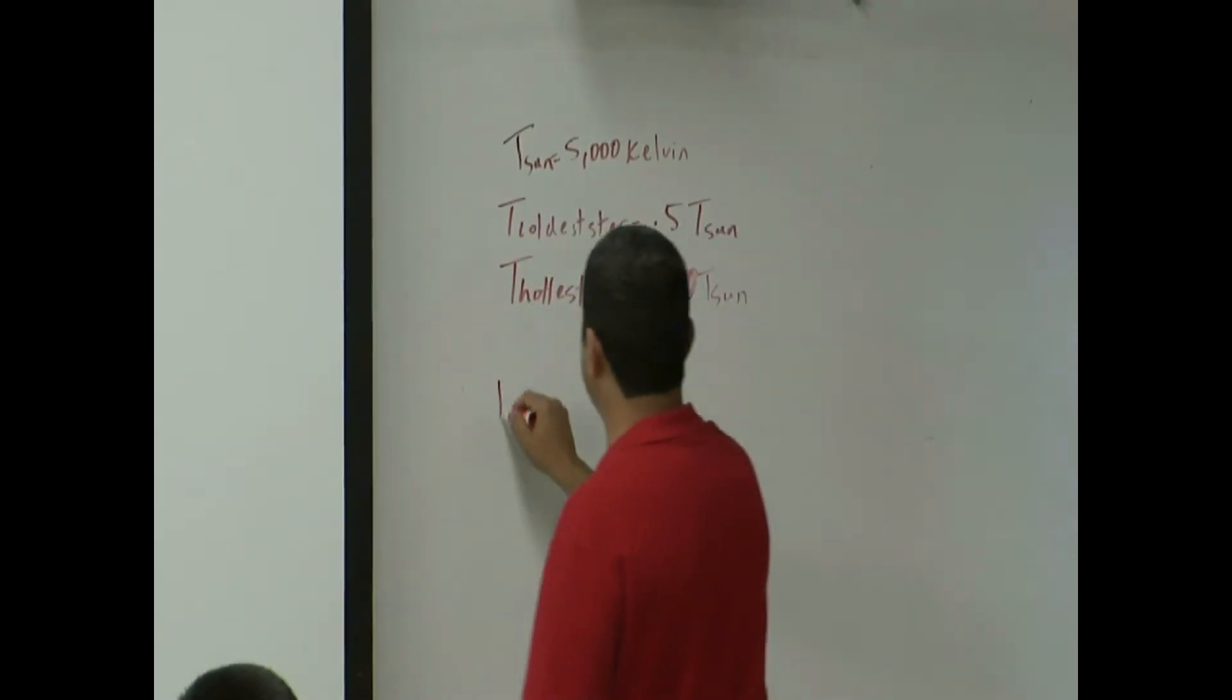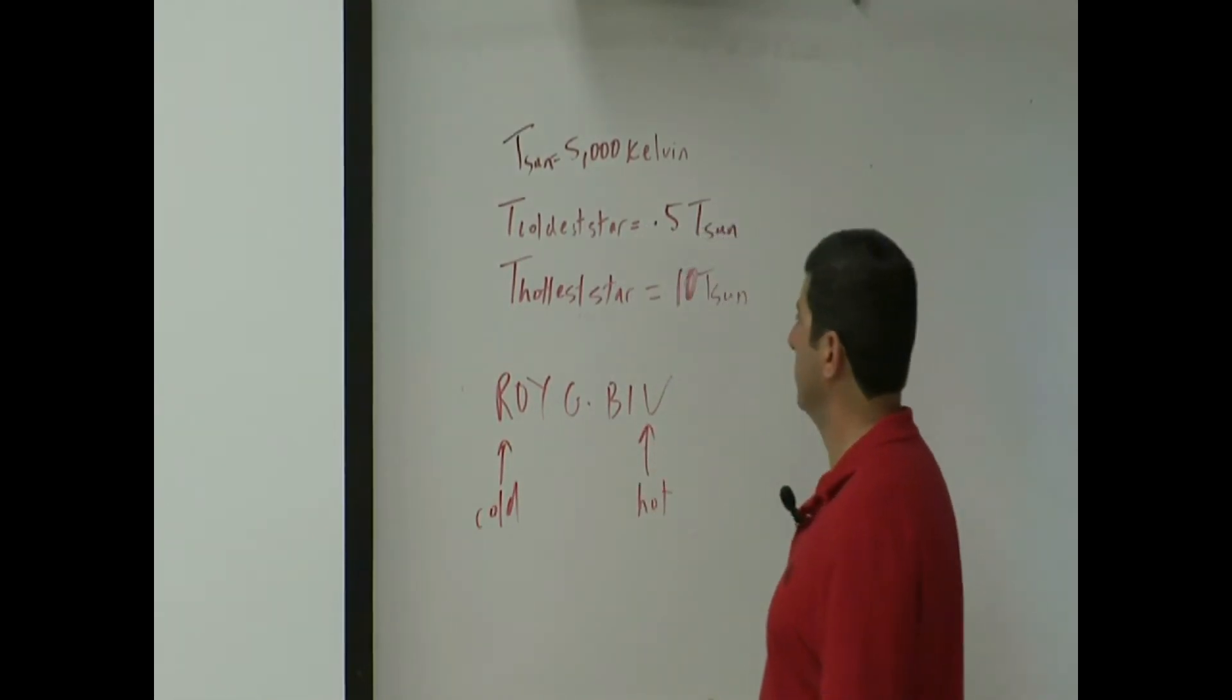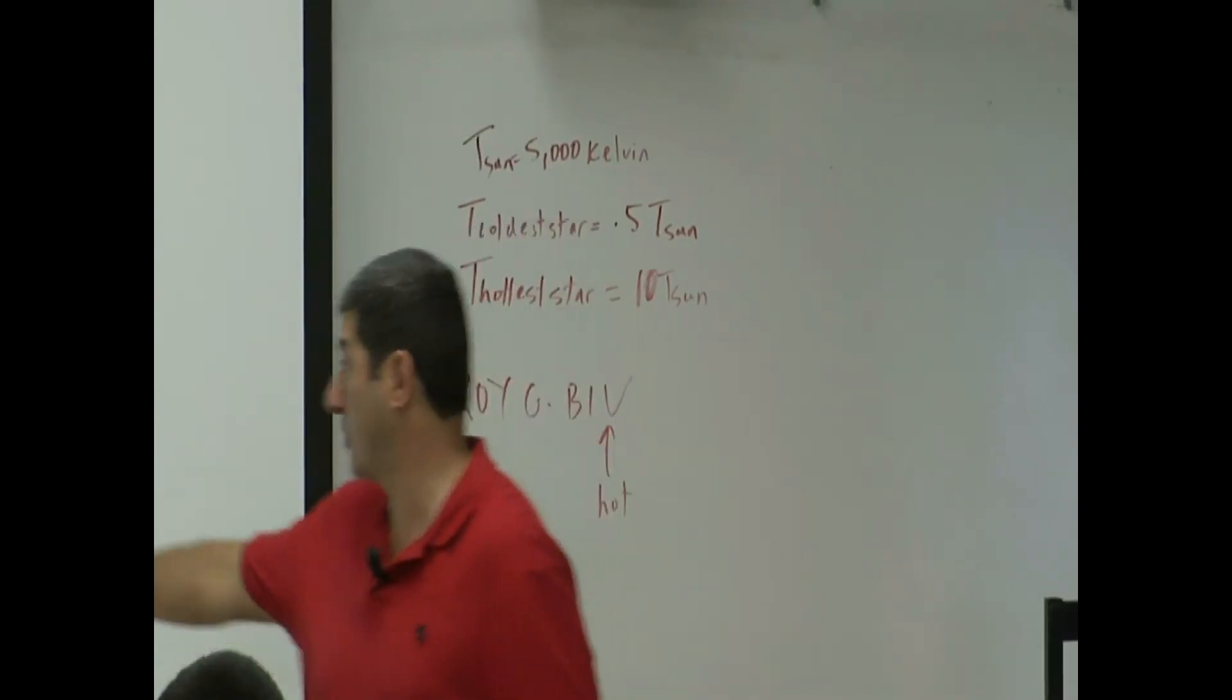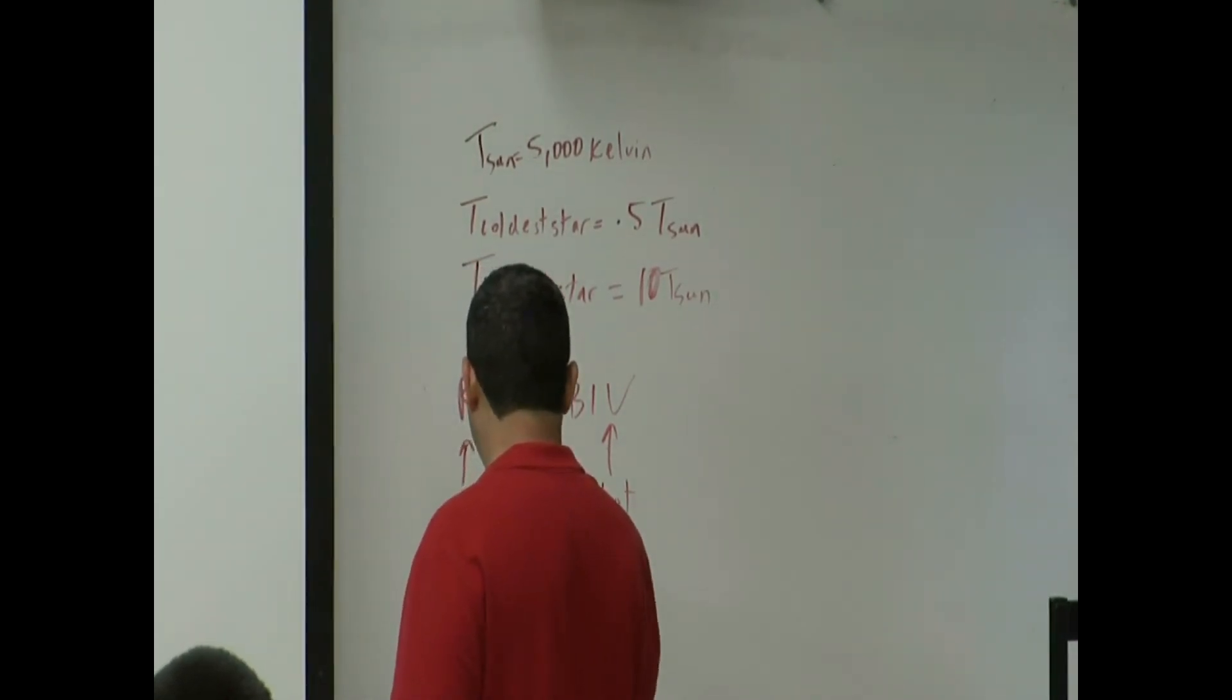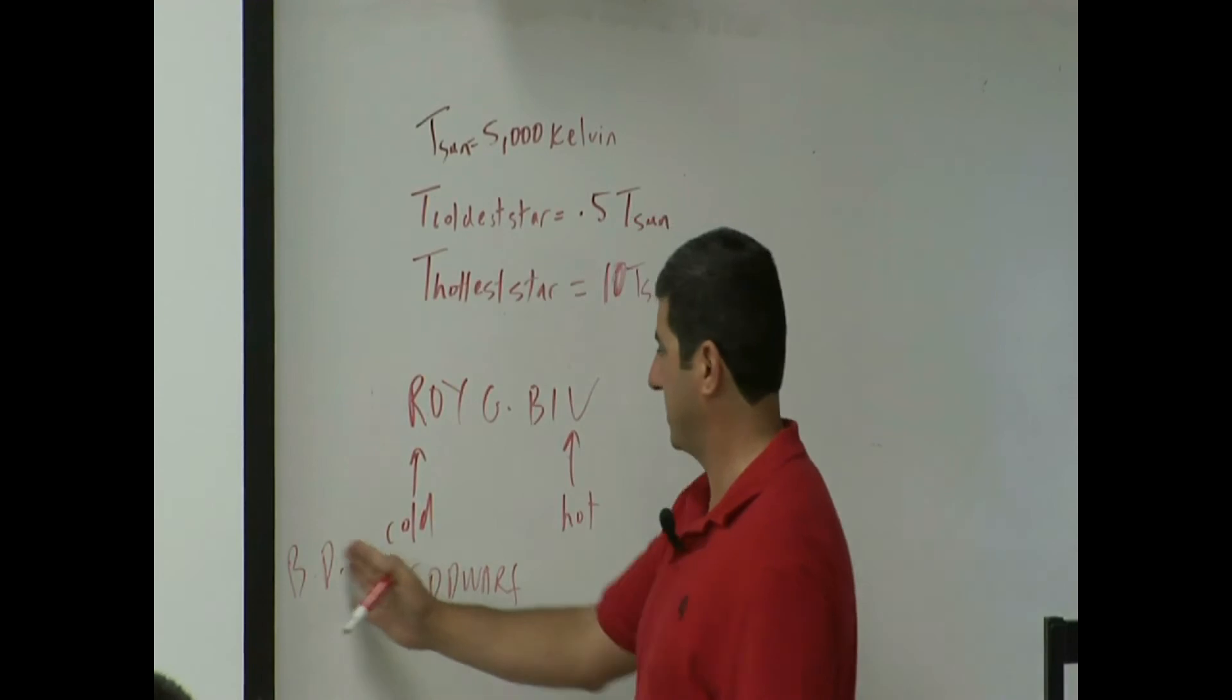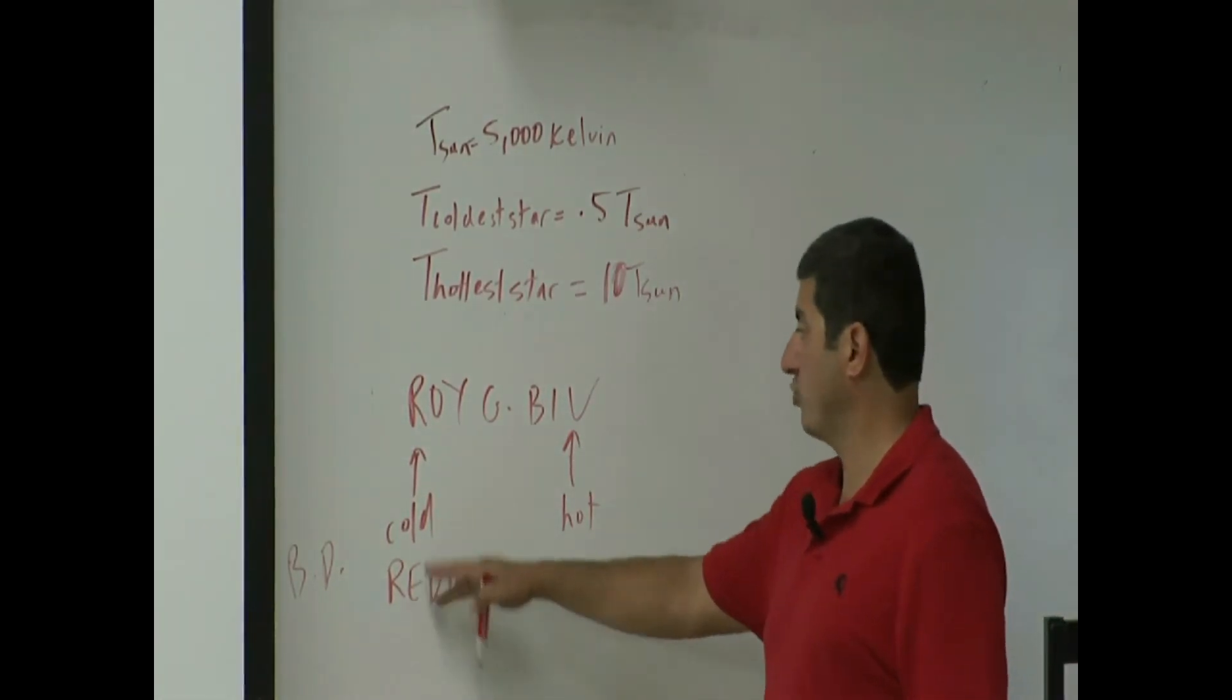What color will this coldest star appear? Remember the visible spectrum, ROYGBIV. Remember we mentioned earlier, cold stars appear more red, hot stars appear more violet. So the cold stars, which are half the temperature of the sun, they're going to be red. These are going to be called red dwarf stars. Red dwarf, not brown dwarf. They're hotter than brown dwarfs. Where would brown dwarf be on this scale? They would be on the left. They're even colder than the red dwarf. Brown dwarfs emit mainly infrared. They emit mainly infrared, but they do emit some red, and that's what helps us to see it as brown. But red dwarfs emit mainly red.